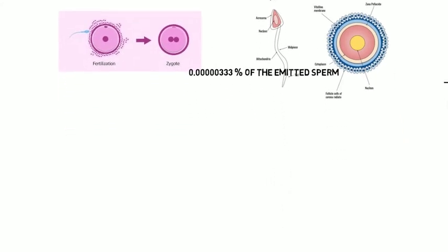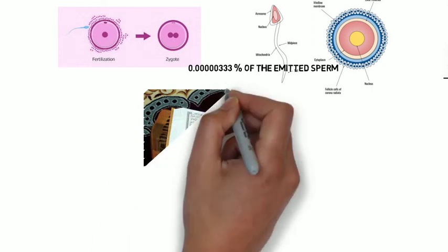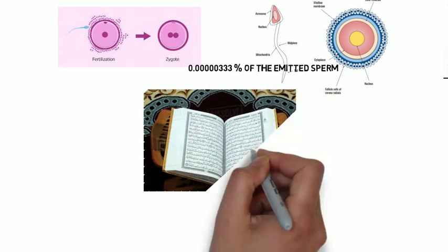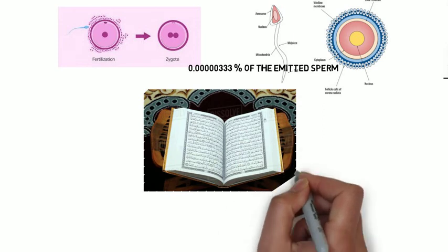This scientific fact was mentioned more than 1,400 years ago in the Holy Quran by describing the creation of man through a drop of sperm.